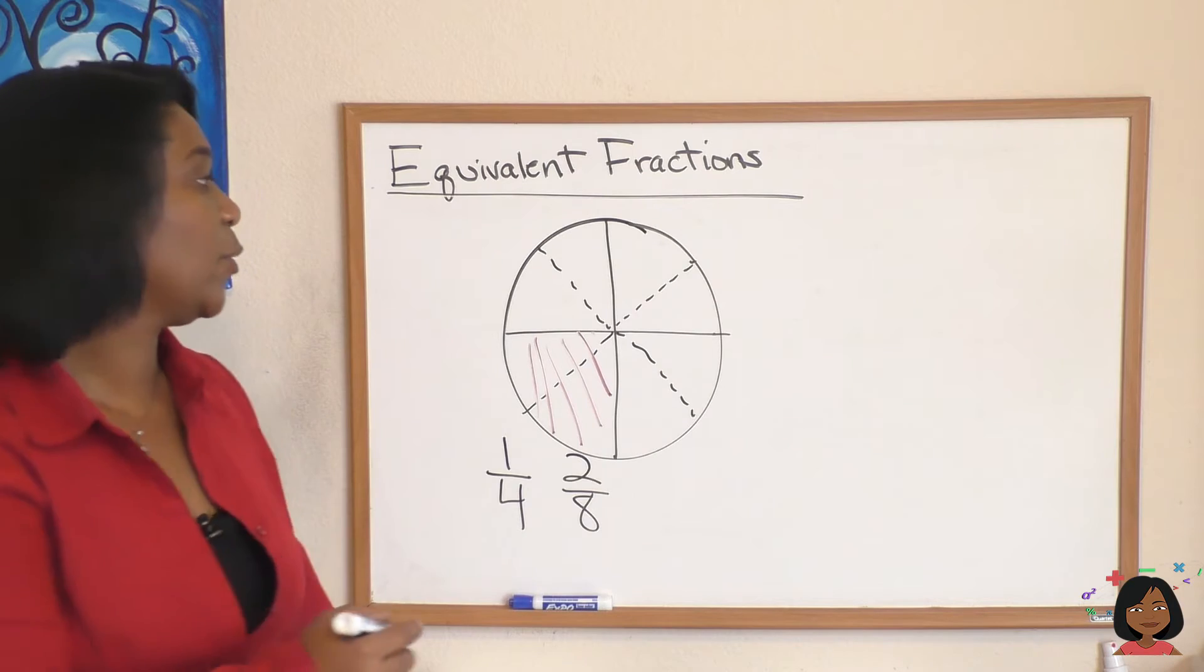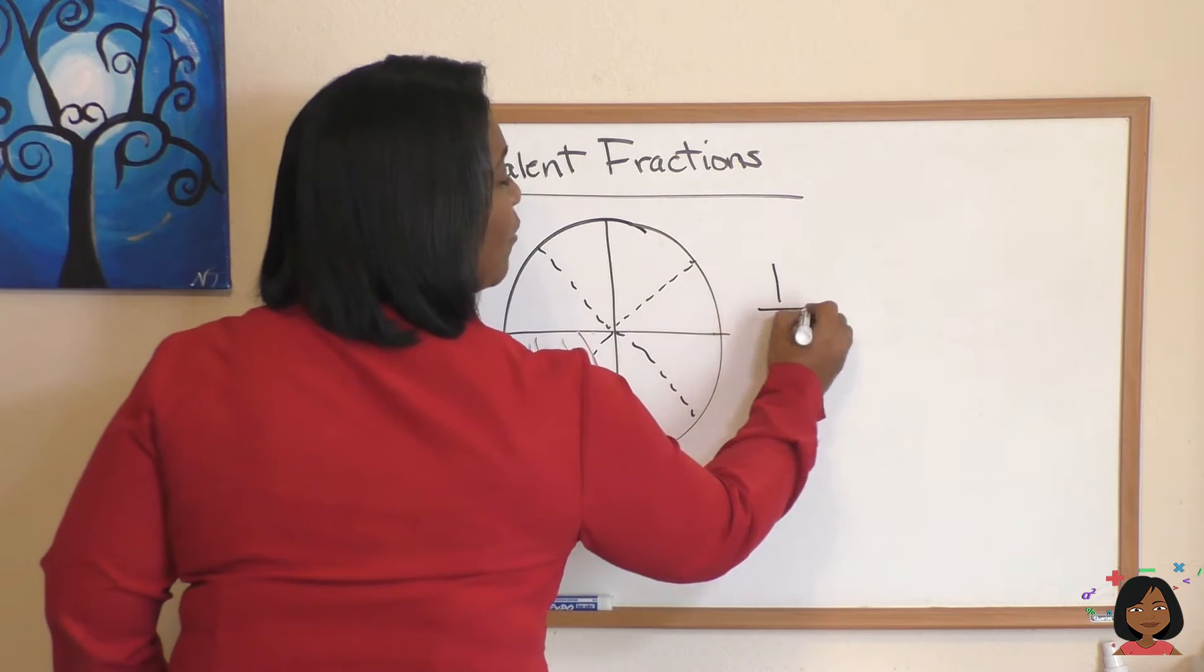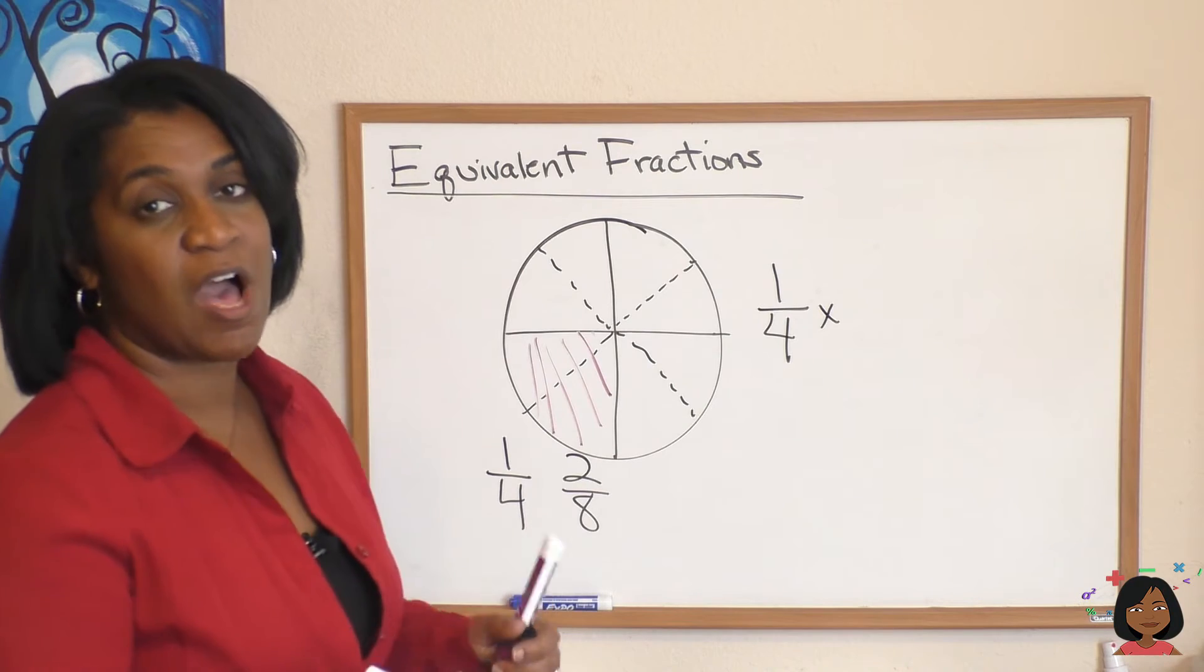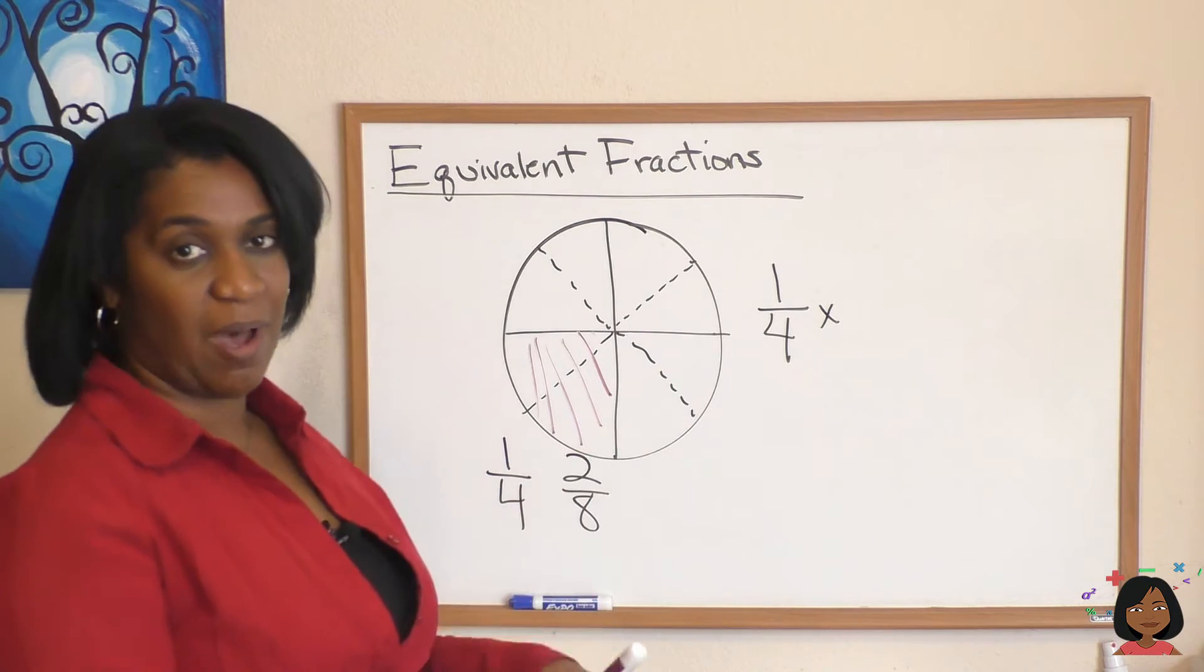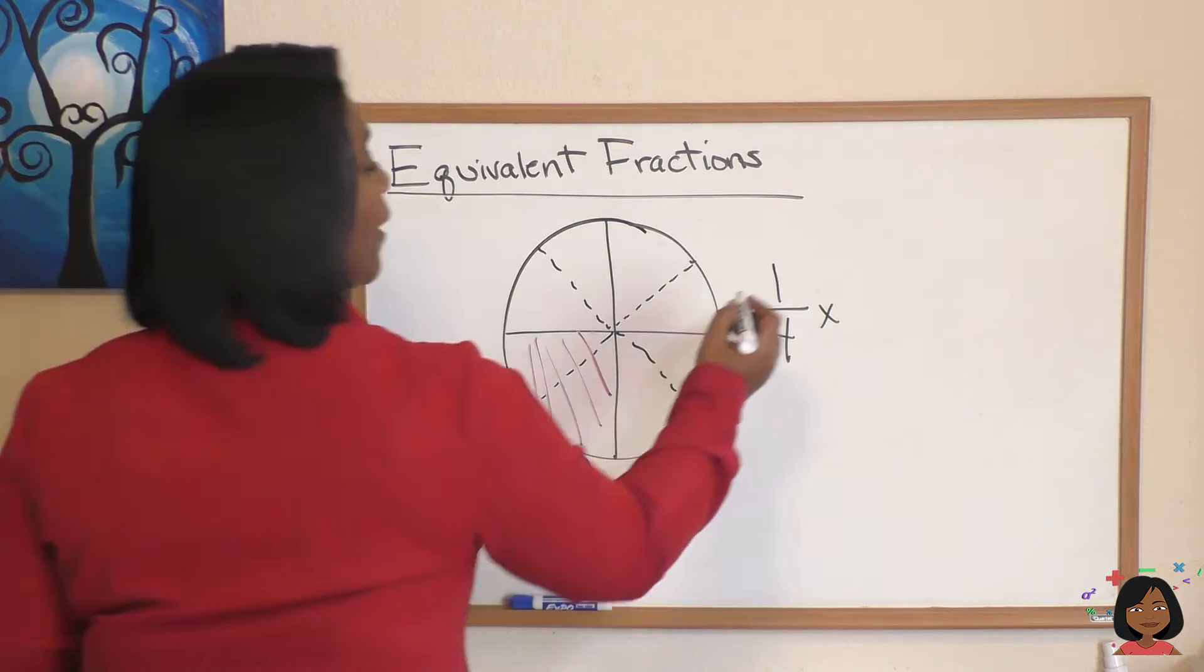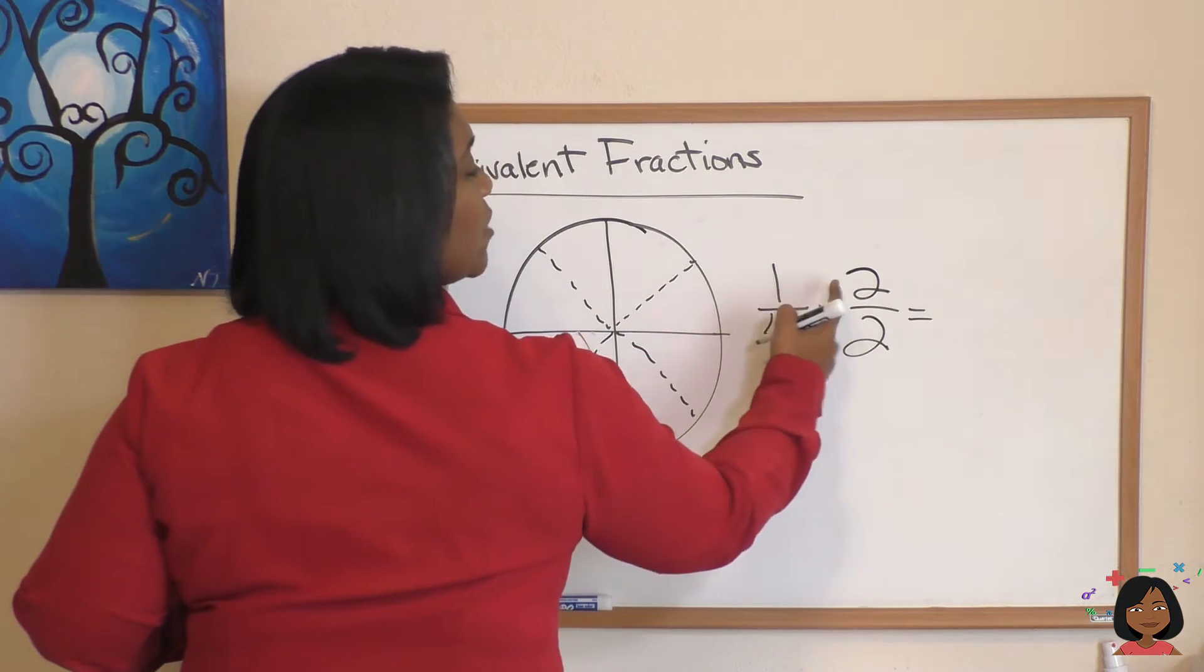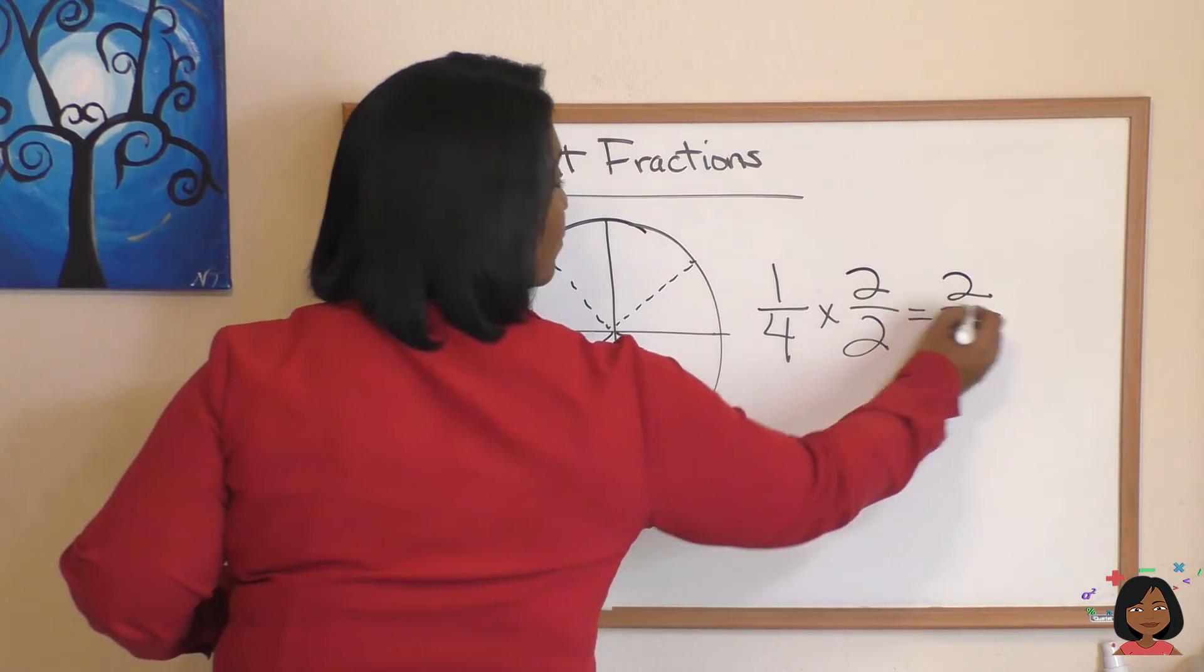How did we move from one-fourth to two-eighths? Well, I'm going to show you. If you take one-fourth and you multiply it by the same number on the top and on the bottom—let's multiply it by two—what do we get? One times two is two, four times two is eight. Well, look at that: one-fourth equals two-eighths.